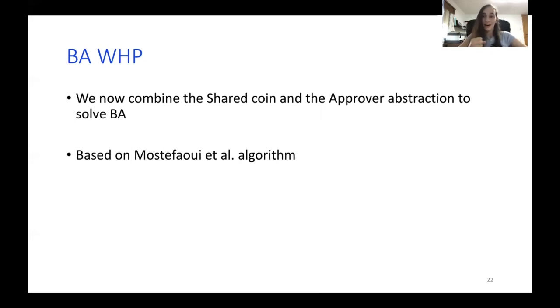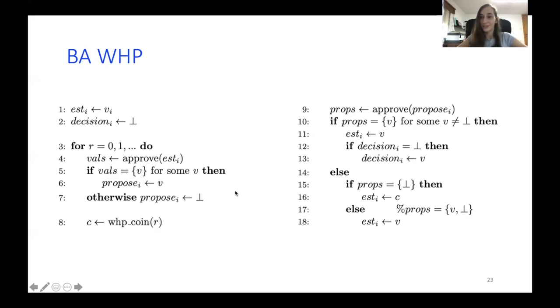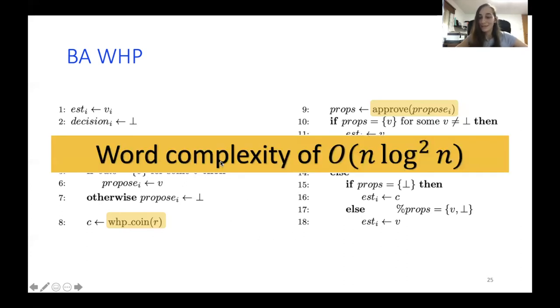So now with shared coin and approve in hand, we can go and solve the Byzantine agreement. And our protocol is based on the Mostéfaoui et al. algorithm. I won't get into details on it, but one thing that is important to notice is that we have two invocations of approve and one of the shared coin. And beside that, all the protocol, which is quite short from the beginning, is local computation. So a process does not need to communicate with other processes, except when doing so in the approve and shared coin, which is great because it means that we're done. Because we have the O log n messages from the shared coin and O log squared n of the approve, and it sums up to subquadratic communication.